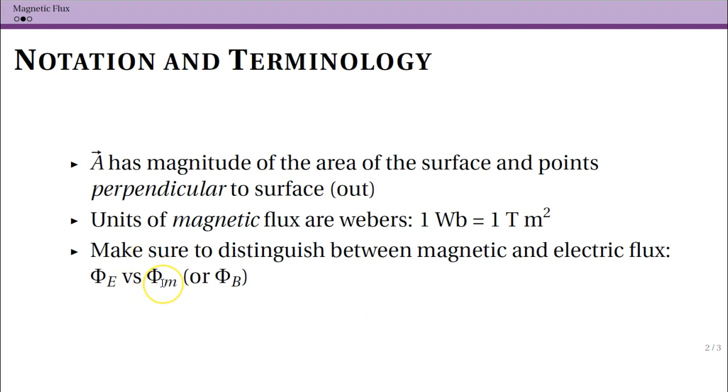Make sure that you use a subscript to denote it. Capital phi gets used for flux, either electric or magnetic. If you want to have it right, make sure that you put sub E for electric. The book uses sub M for magnetic, but if you use sub B, that will be pretty clear as well that you mean magnetic for that. Just be careful about this. Make sure that you understand the equations on the equation sheet. What is what? And if you're doing a problem that has both, make sure you use subscripts.